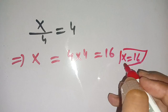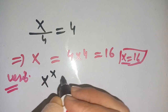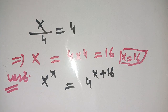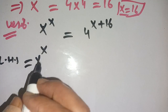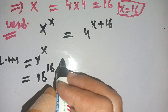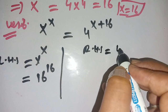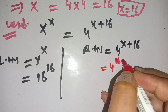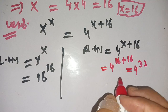Thus the value of x is 16. Now our last step is to verify whether x = 16 satisfies our equation x^x = 4^(x+16). Left-hand side: 16^16. Right-hand side: 4^(16+16) = 4^32.